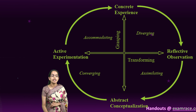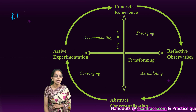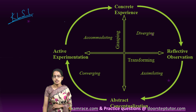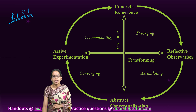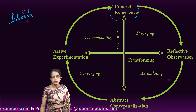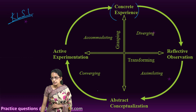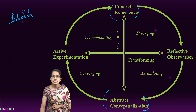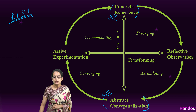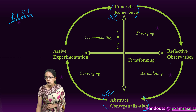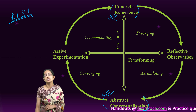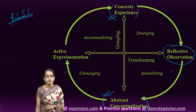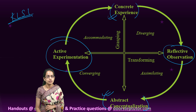Kolb's Learning Style Index, the KLSI, has been given under the following diagram. There are two elements based on grasping experiences: concrete experiences and abstract concepts. We also have the transformations that occur in it — reflective observations and active experimentations. Experimentations and observations are part of the transformations that happen.